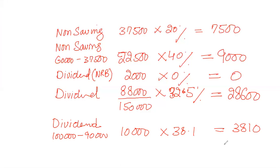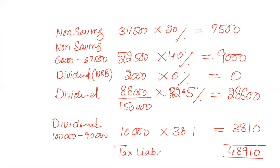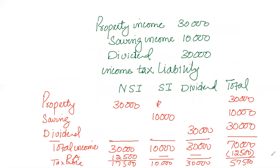Total income tax liability is £7,500 + £9,000 + £28,600 + £3,810, coming to £48,910. That is our total tax liability for this example.